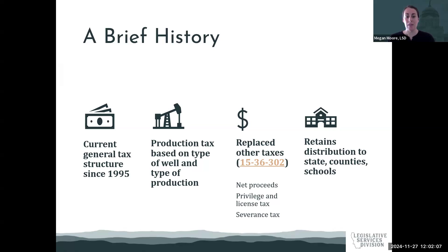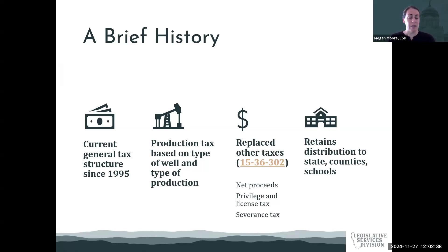This production tax is based on the type of well and the type of production that takes place. In Section of Law 15-36-302, there's a legislative findings and declaration of purpose section enacted when the production tax went into effect. It tells us the reasons for moving to a production tax — that the previous taxes were, quote, exceedingly complex and confusing, and that producers often had to pay taxes at different times on the same production. The goal was to simplify the taxation of oil and natural gas.